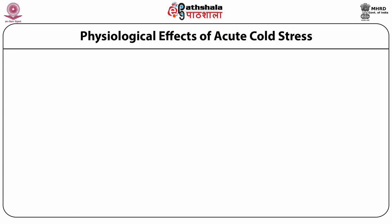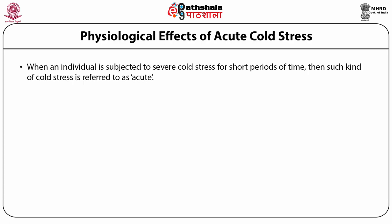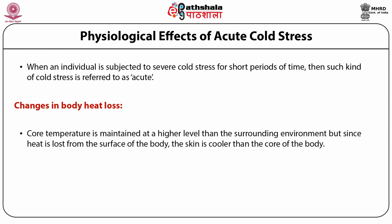Physiological effects of acute cold stress: when an individual is subjected to severe cold stress for short periods of time, this is referred to as acute cold stress. Core temperature is maintained at a higher level than the surrounding environment, but since heat is lost from the surface of the body, the skin is cooler than the core. This temperature gradient between the core and the skin can be modified by altering insulation of the skin and tissues to regulate heat loss by convection and conduction.